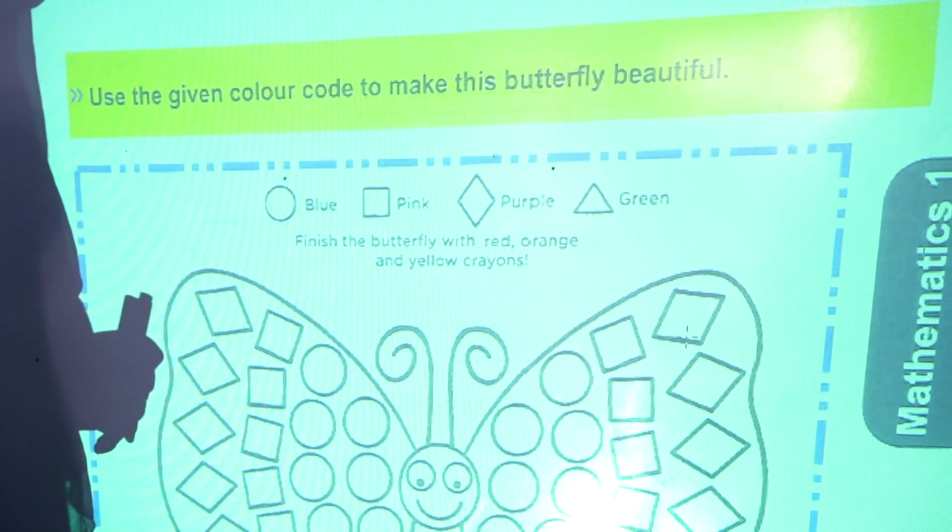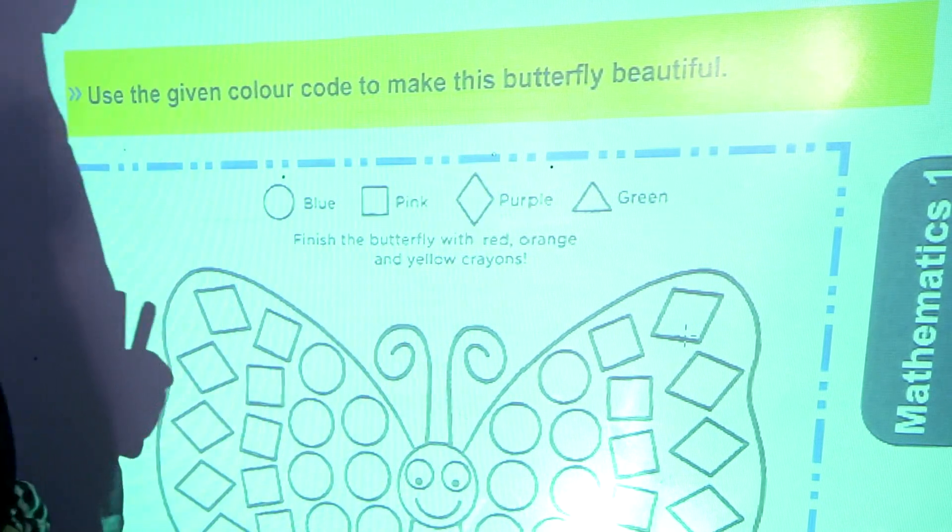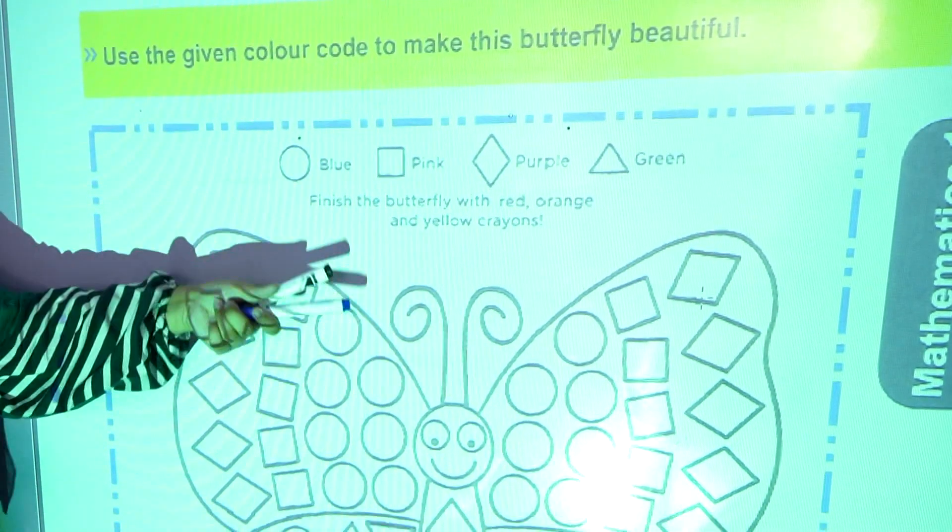Pink color in squares, diamond shape, you have to color purple and triangles, you have to color green. In this way, you will complete your butterfly.